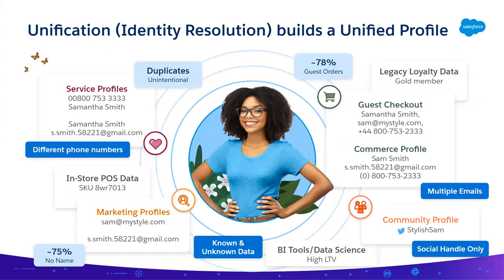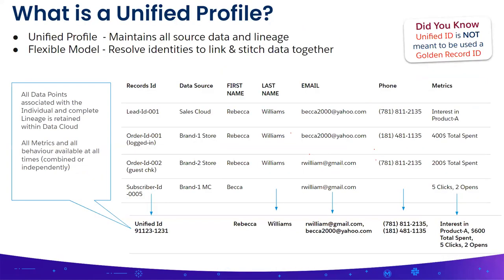This is what identity resolution looks like in practice: data coming from different sources — multiple emails, phone numbers, social handles, commerce profiles — is mapped and creates a unified profile. The unified individual ID is a new ID generated from matching records across systems.